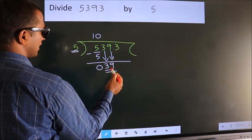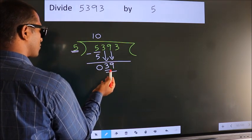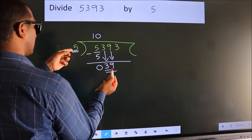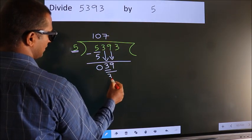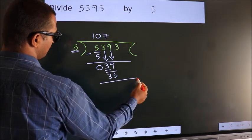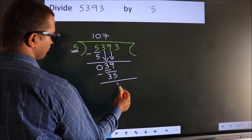So 39. A number close to 39 in 5 table is 5 times 7, 35. Now we subtract. We get 4.